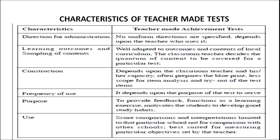Third is the construction of the teacher-made test — it depends upon the classroom teacher and his capacity, often prepared without a blueprint, with less scope for item analysis and tryout of test items. Fourth is the frequency of use — it depends upon the purpose of the test to be served. The fifth characteristic is purpose: to provide feedback, function as a learning exercise, and motivate students to develop good study habits. Lastly, the use — score comparison and interpretation are limited to the particular school and not for comparison with other schools.